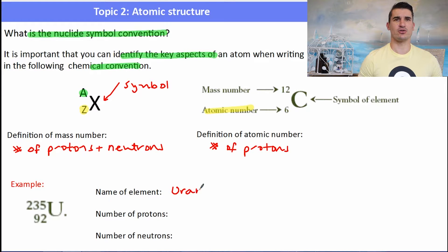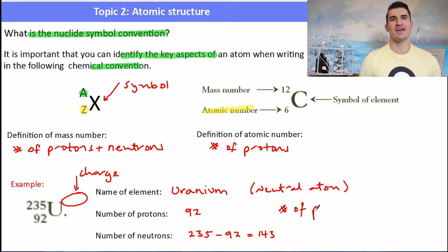For example, if we have 235 over 92 U, what element is that? That's a uranium isotope. The number of protons is the Z, so in that case it's 92. To work out the number of neutrons, we've got the mass number and the number of protons. So what we need to do here is a subtraction. We do the mass number take away the number of protons to give us 143. This uranium isotope is neutral so it doesn't have a charge. But if we had a charge, it would be in the top right hand corner. Elements are neutral which means they have the same number of protons as the number of electrons. Only ions have a different number of electrons when we compare them to protons.